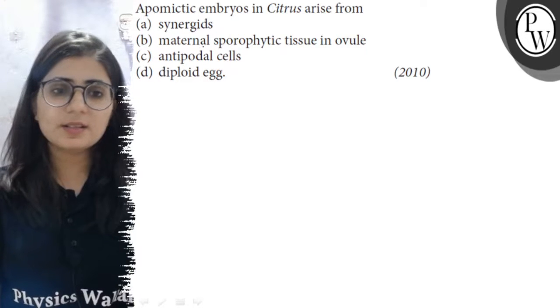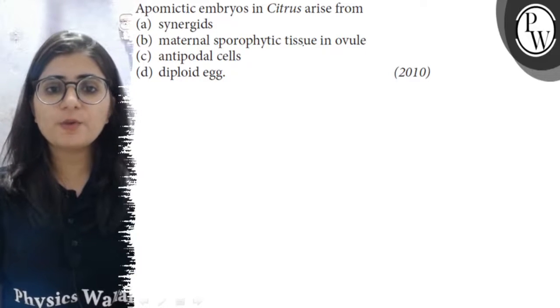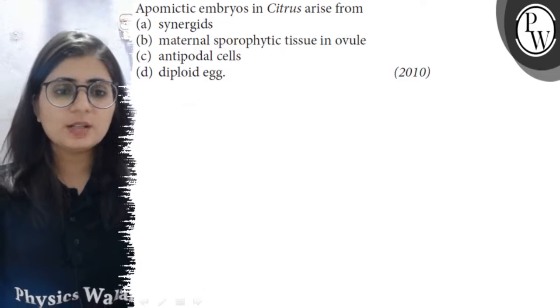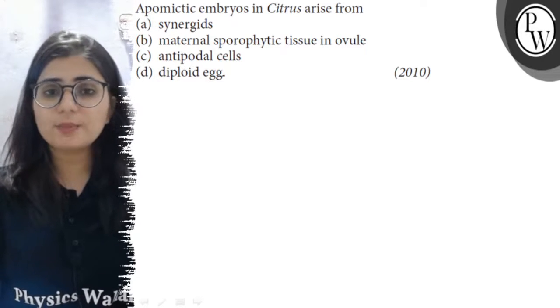The options are: A. Synergids, B. Maternal sporophytic tissue in the ovule, C. Antipodal cells, and D. Diploid egg.